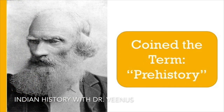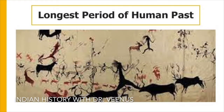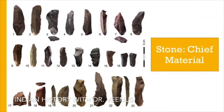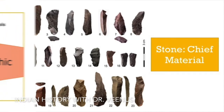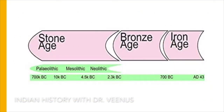Namaste. The term prehistory was coined by Daniel Wilson and has been used ever since to refer to the period of human history before the invention of writing. It is the longest period of the human past. This period is also called the Stone Age, as stone was the chief material used by early man for his survival. The Stone Age has been divided into Paleolithic, Mesolithic and Neolithic, followed by Bronze and Iron Age periods.